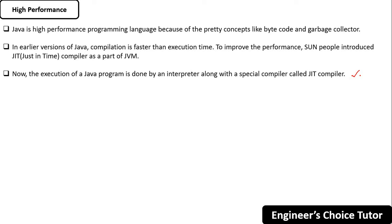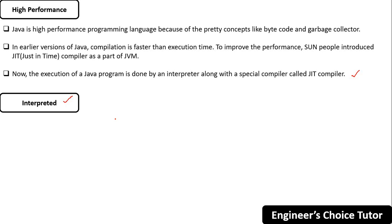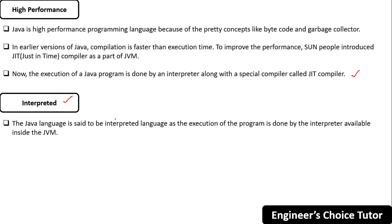The JIT compiler works alongside the interpreter to reduce execution time and improve application performance. Java is also called an interpreted language because the execution of the program is done by the interpreter which is available inside the JVM.